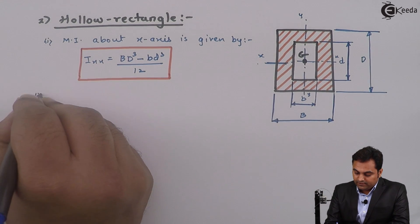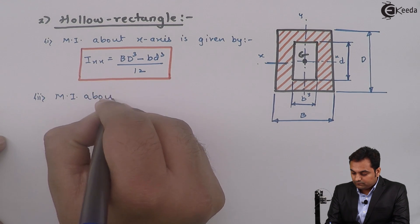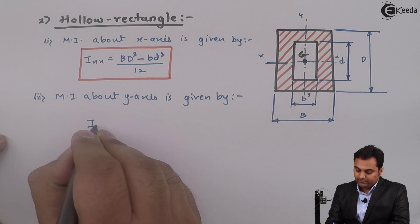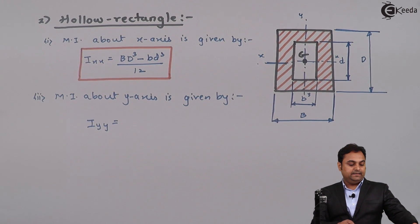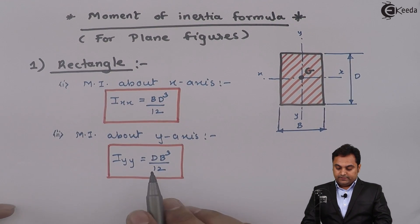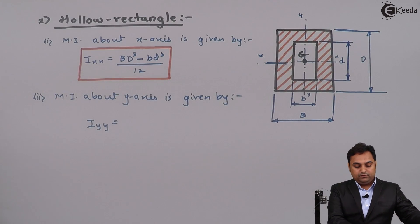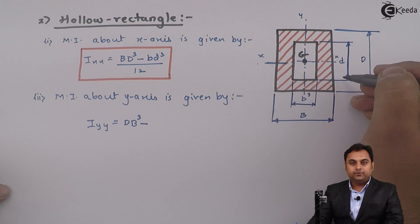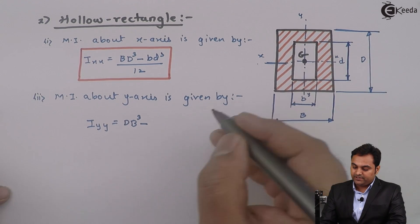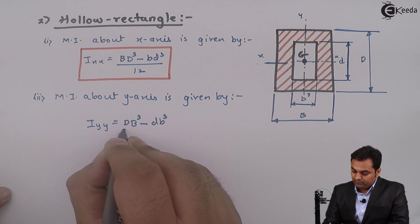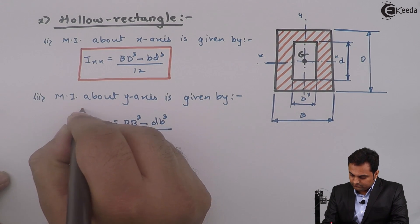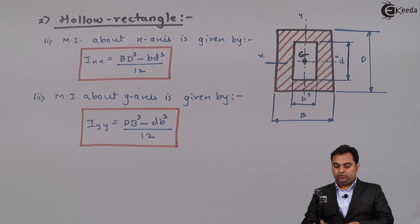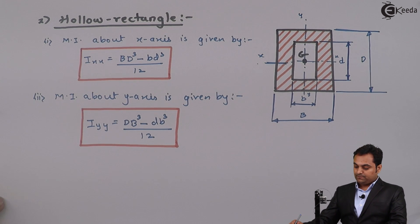Next, MI about the Y-axis: previously for a solid rectangle I_YY was DB³ by 12, so here for the hollow rectangle I_YY is equal to capital D·B³ minus small d·b³, all divided by 12. We subtract the inner rectangle moment of inertia from the outer rectangle moment of inertia. This is the moment of inertia formula for a hollow rectangle.